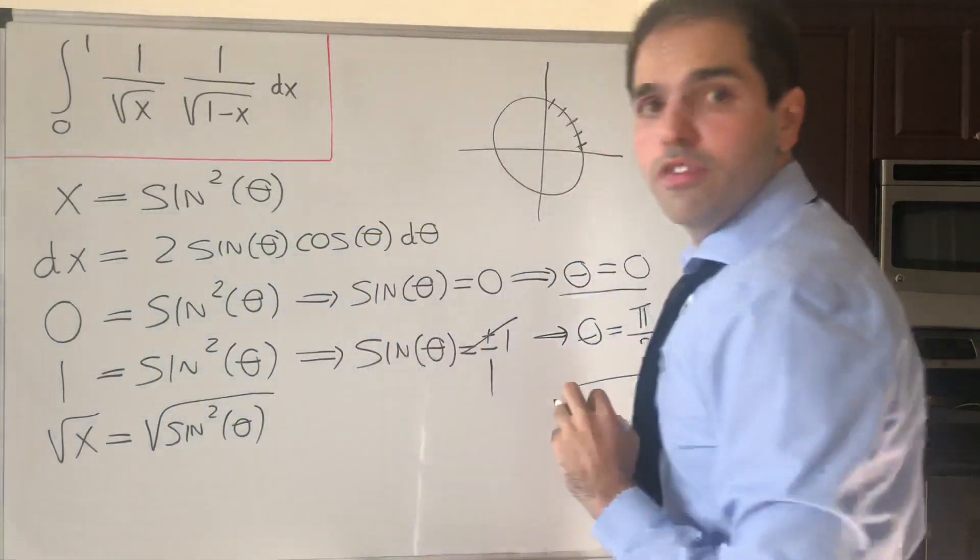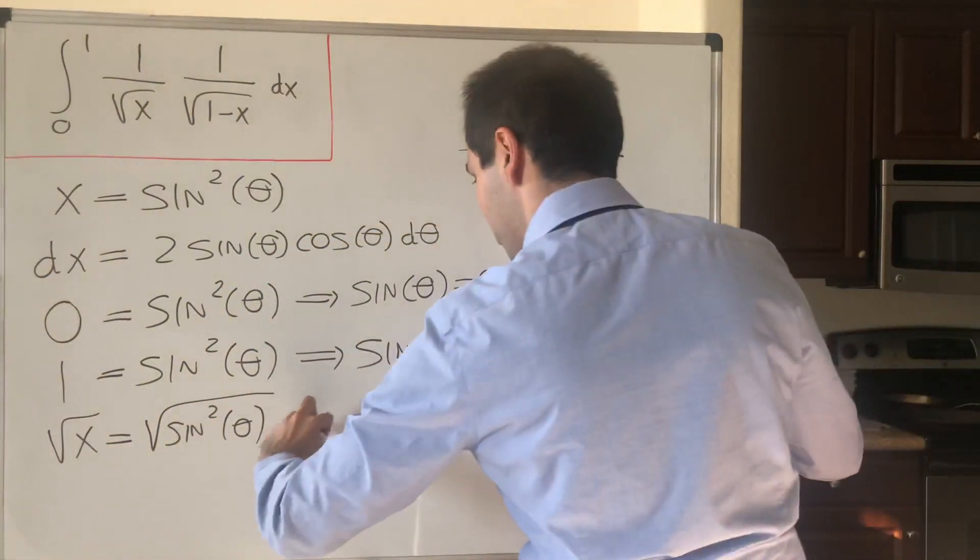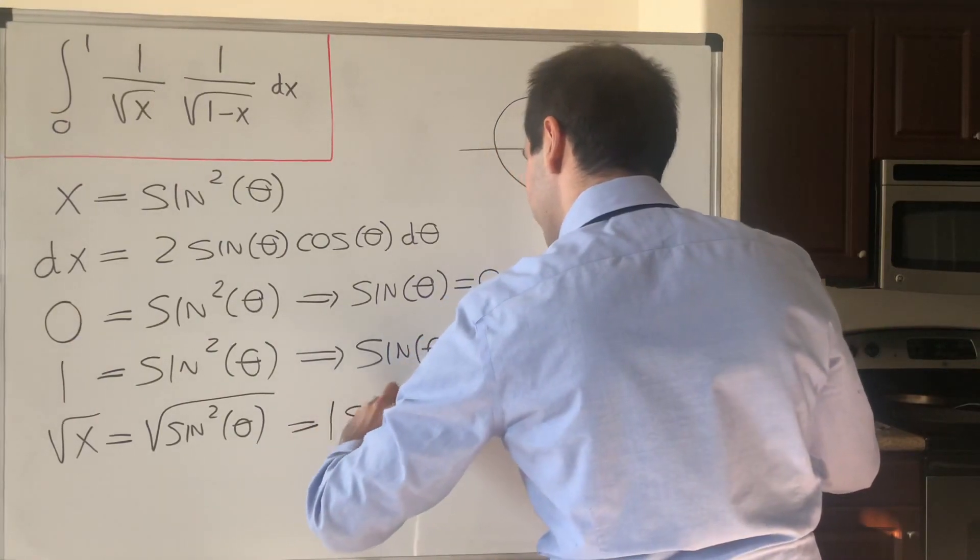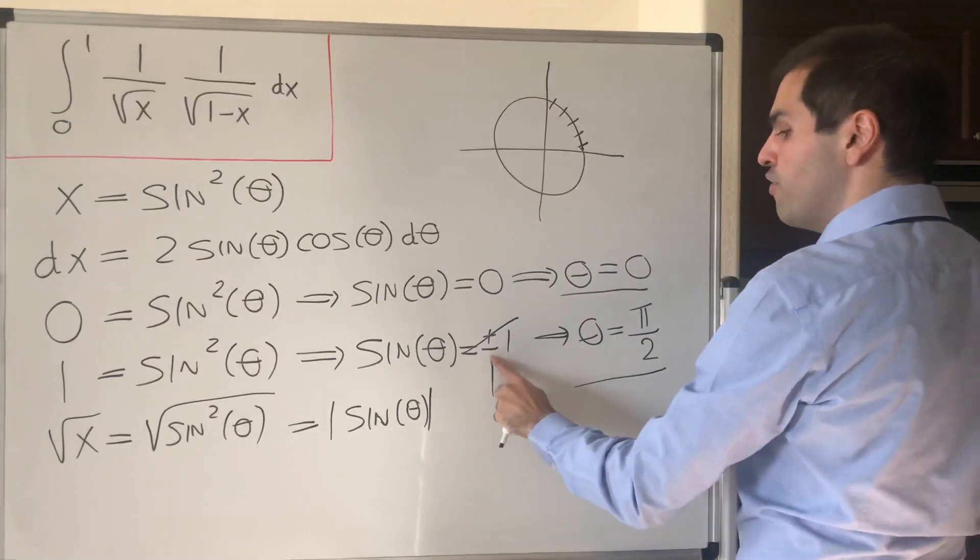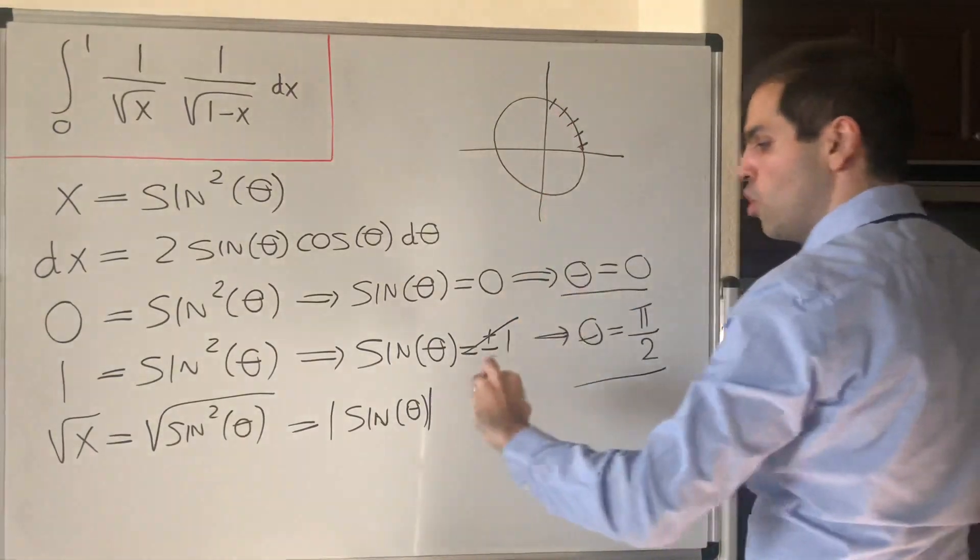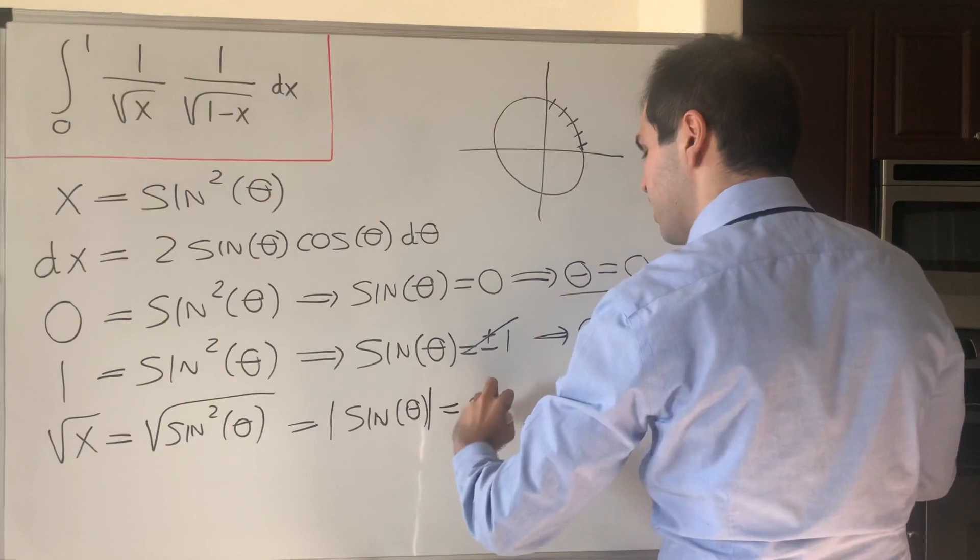Well, it's square root of sine squared theta, but square root of sine squared is just absolute value of sine of theta. But in the first quadrant, sine of theta is non-negative, so in the end it just becomes sine of theta.